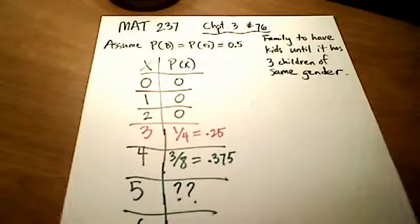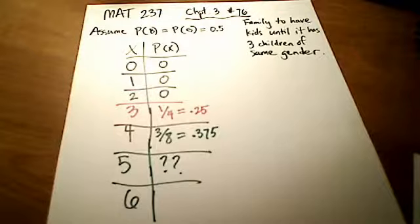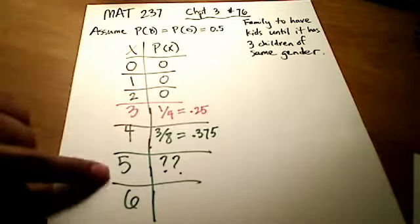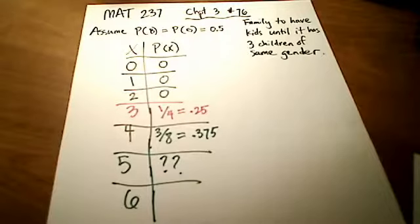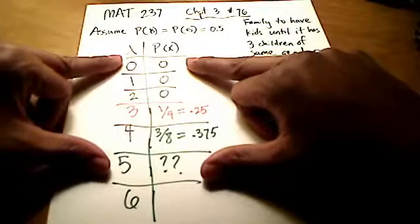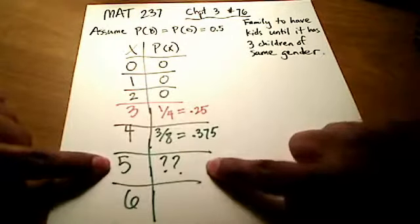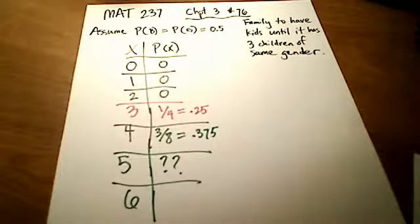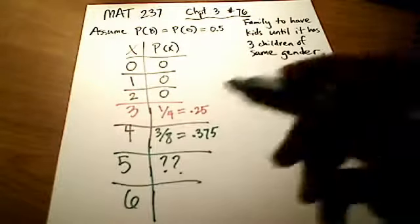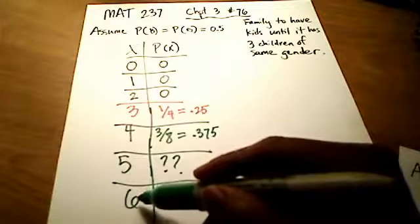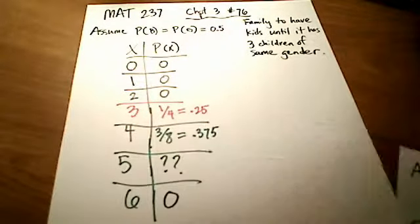Here's one final thought: is there a way to have six children where three of the same gender hasn't already been achieved within the first five children? I don't think so. All possible ways of getting three children of the same gender are covered between zero and five children. Having five children guarantees three of the same gender, so a sixth child adds nothing. The probability of needing six children where three are the same gender is zero — they're already included in every previous case.